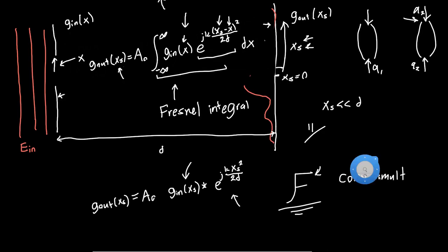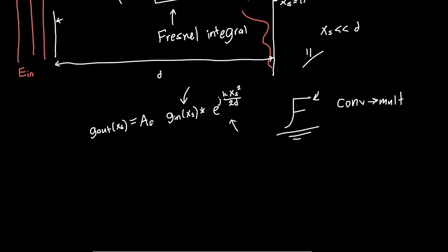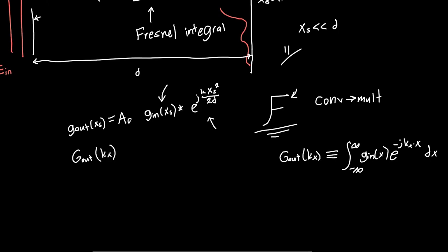So if we just blindly apply the Fourier transform to both sides, we'll get g_out, which is now a function of k_x. So this is the Fourier transform, where I'm defining g_out of k_x as the integral, so this is just the Fourier transform, g_in of x, e to the minus j k_x times x, integrated over x. And so this is just the Fourier transform in terms of this frequency k_x.